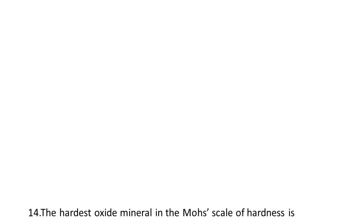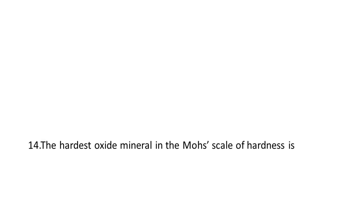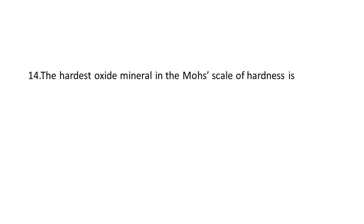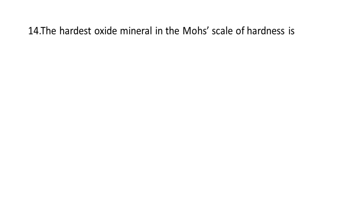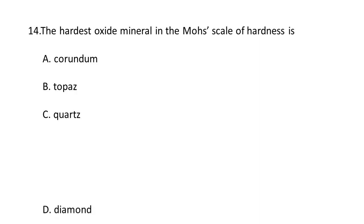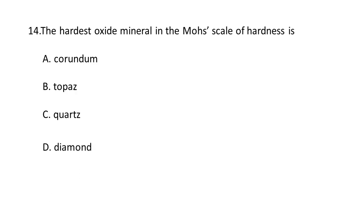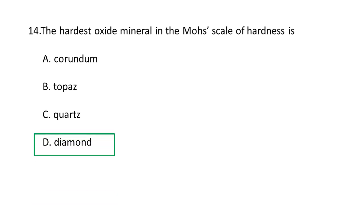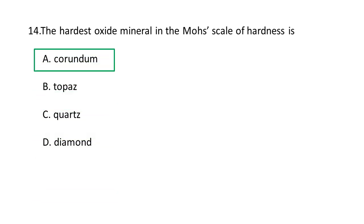Next question: The hardest oxide mineral on the Mohs scale of hardness is — A. Corundum, B. Topaz, C. Quartz, D. Diamond. The hardest oxide mineral is corundum, with chemical composition Al2O3. A is the correct option.